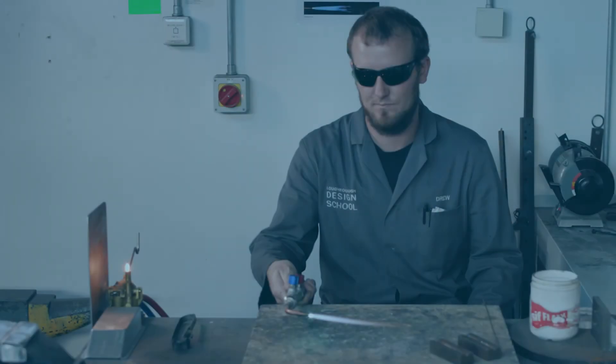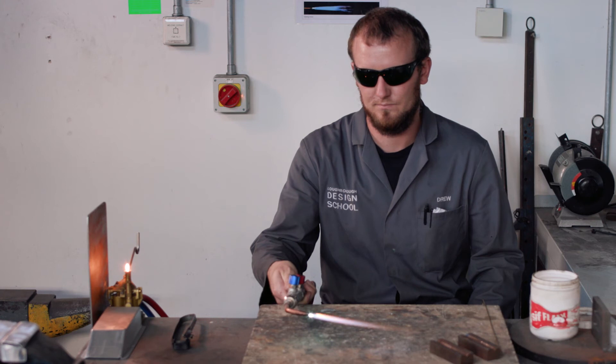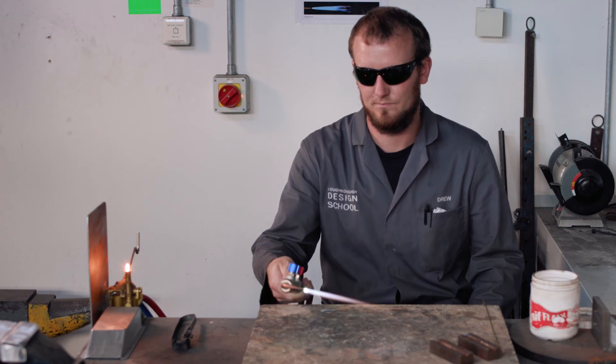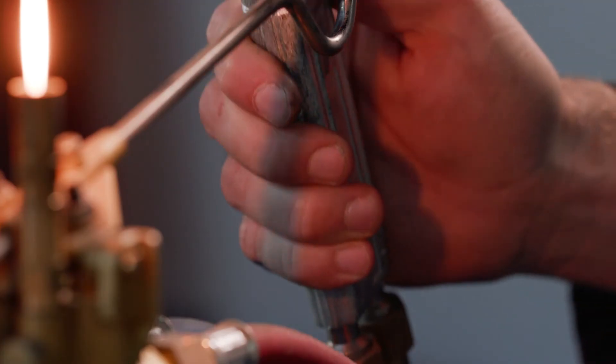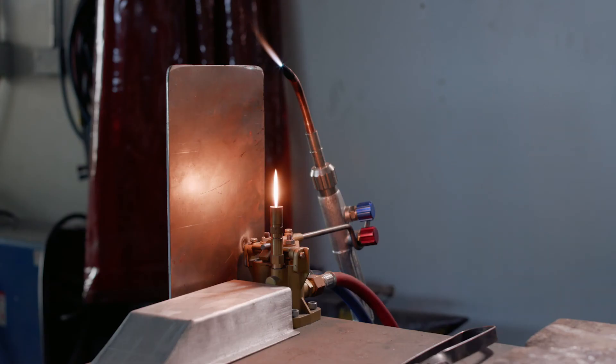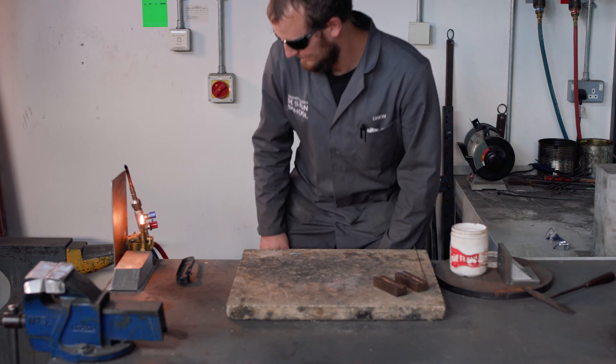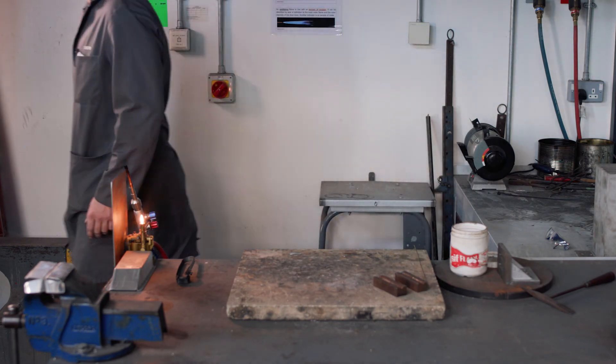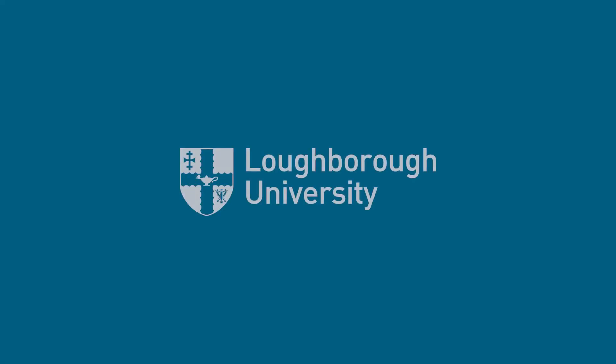To extinguish the torch, simply return it to the cradle. Carefully and gently rest the red tap into the crook of the cradle, ensuring it's seated safely before taking your hand away. The flame will fade slowly. Wait until it's totally extinguished before leaving the work area.